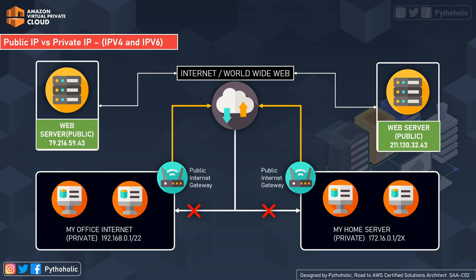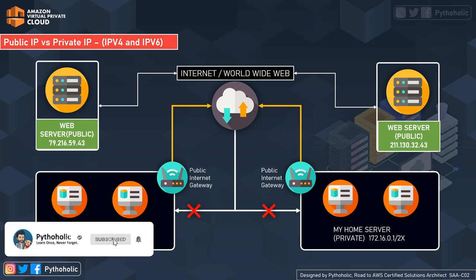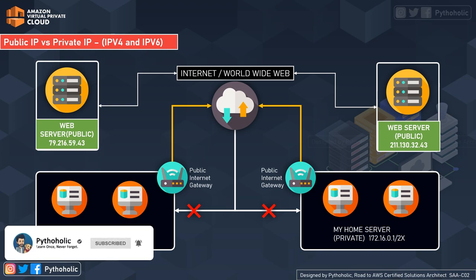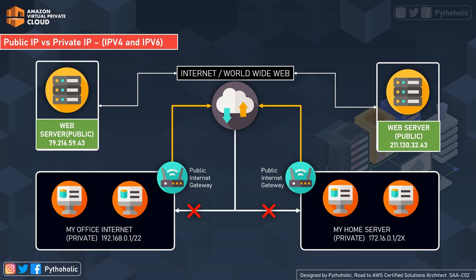You cannot access a private IP from outside its network unless you have a VPN connection to the network or something that grants access. To recap: if you have a public IP, anyone can access your broadcast data with sufficient permissions, just like Instagram, Facebook, and YouTube, which all have public IPs mapped to DNS names. And you cannot access a private IP from outside its network without a VPN or equivalent access grant.